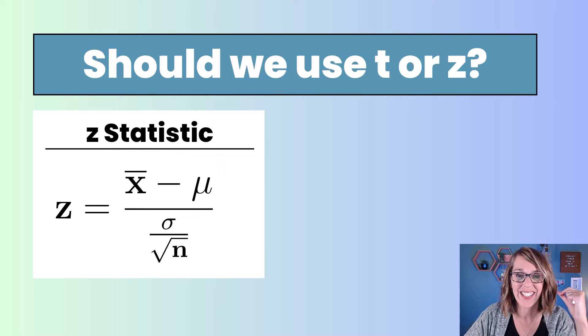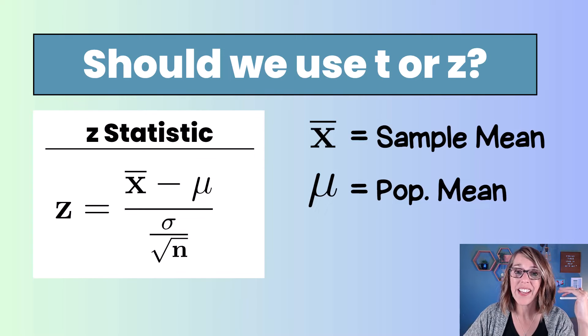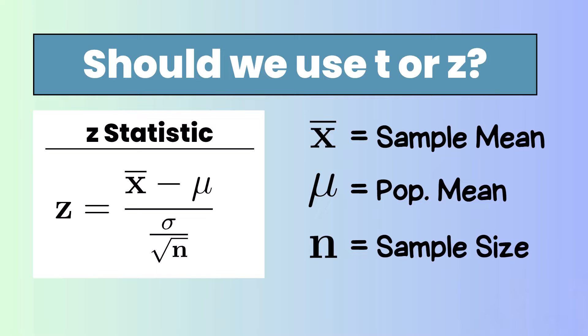Let's start with that Z statistic. So I've got the formula here. X bar is going to be our sample mean. Mu is our population mean. N is the sample size. And sigma is our population standard deviation. And that's what makes this a Z statistic, that population standard deviation.